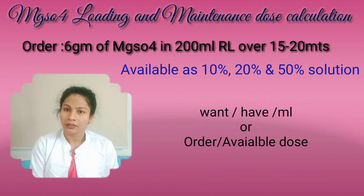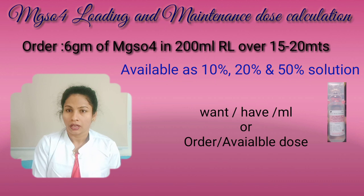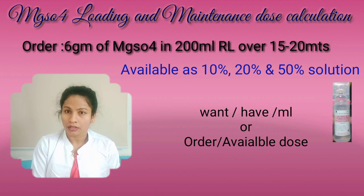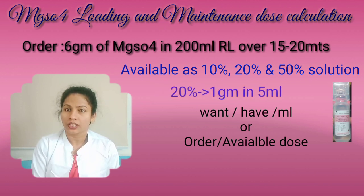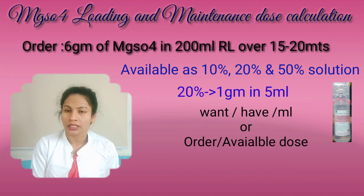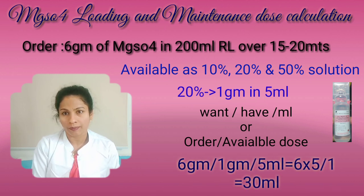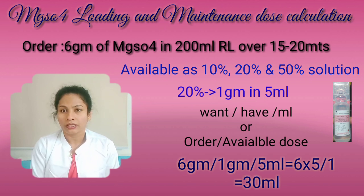Next, I will tell you how to take 6 grams from the 20% solution. As computed before, in the 20% solution, 1 gram is 5 ml. Applying the formula — what we want divided by what we have — what we want is 6 grams and what we have is 1 gram per 5 ml. When we calculate this we get 30 ml.